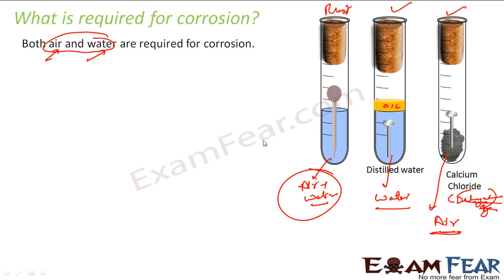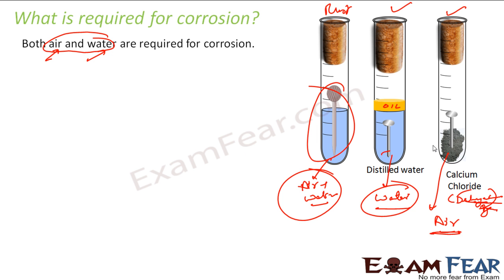This is an experiment you can do at home. Take three test tubes: in the first, put a nail in water with air present — air and water both. In the second, put the nail in water with oil to block air — only water. In the third, put calcium chloride from a lab, close it, and after one week you will find the first nail gets corroded and the other two are fine. The key message: both air and water are required for corrosion.